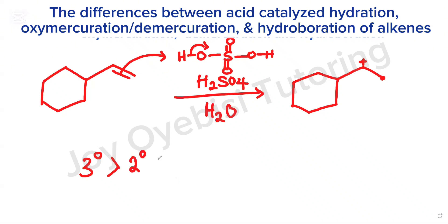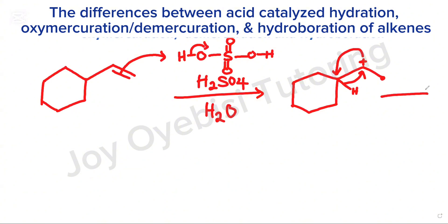When hydrogen attaches here, this side becomes positive, so you have a carbocation. A tertiary carbocation is more stable than a secondary carbocation, which is more stable than a primary carbocation. Because this carbocation is secondary, the carbocation tends to rearrange. The hydrogen here is going to rearrange, forming what we call a hydride shift.